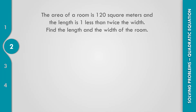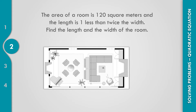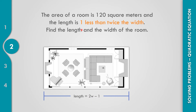For example number 2: The area of a roof is 120 square meters, and the length is 1 less than twice the width. Find the length and the width of the roof. Based on the figure, this is the length.